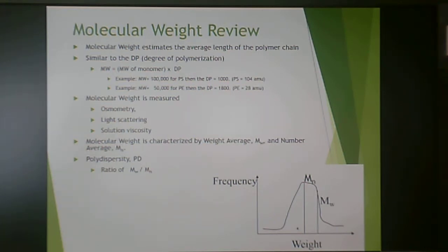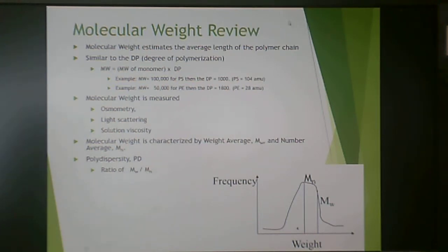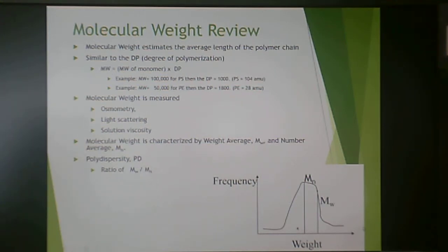Molecular weight can be measured a variety of ways: osmometry, light scattering, solution viscosity, and often by size exclusion chromatography (SEC). When we talk about polydispersity, we are talking about the weight average molecular weight (M sub W) versus the number average molecular weight (M sub N). Polydispersity is the ratio M sub W divided by M sub N. On an SEC curve, M sub N appears at lower molecular weight and M sub W at higher molecular weight, and their ratio equals polydispersity.